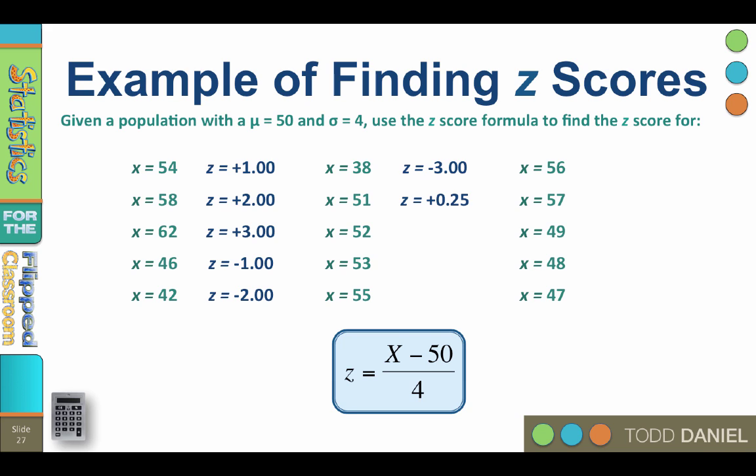How about an x of 52? The z equals 0.50. For an x of 53, z equals 0.75. We've already done x equals 54, so how about x equals 55? z equals 1.25.